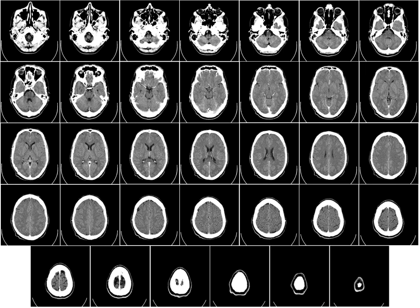Computed tomography scanning of the head uses a series of X-rays of the head taken from many different directions. The resulting data is transformed into a series of cross-sections of the brain using a computer program. CT images of the head are used to investigate and diagnose brain injuries and other neurological conditions, as well as other conditions involving the skull or sinuses. It is also used to guide some brain surgery procedures.